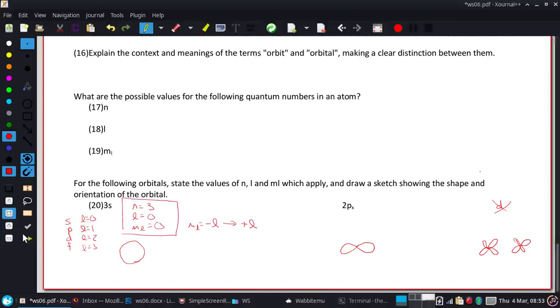For the 2p, you have an n of 2, because of that 2, and the p tells you that your l is 1. And your m sub l would be possibly negative 1, negative l, zero, to positive 1, positive l.